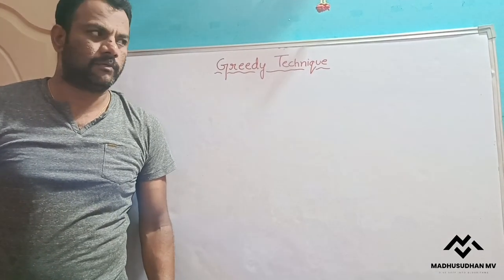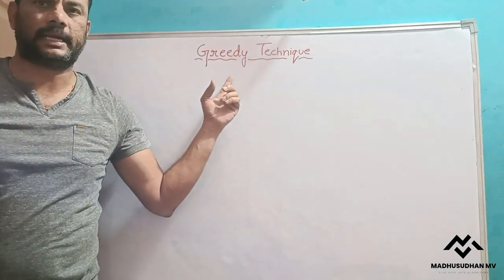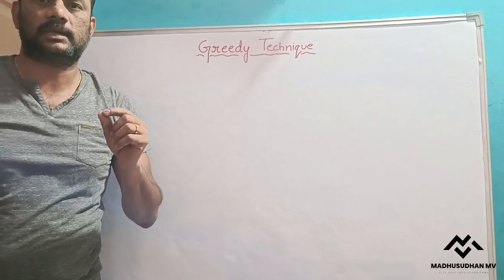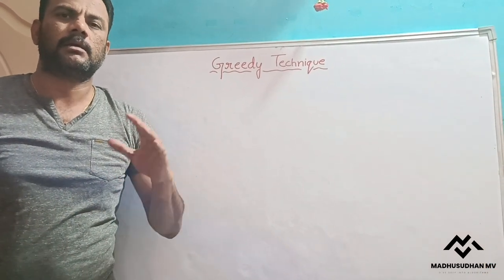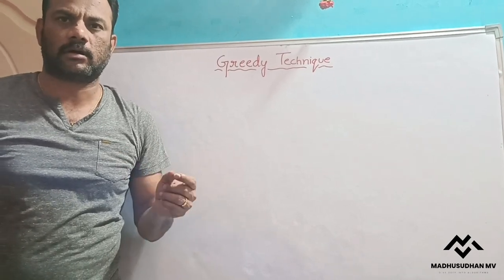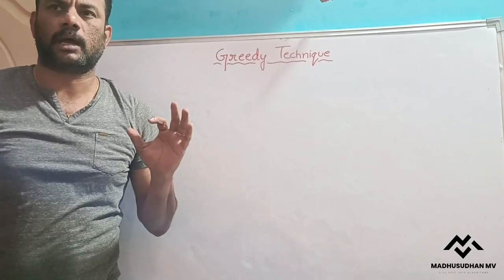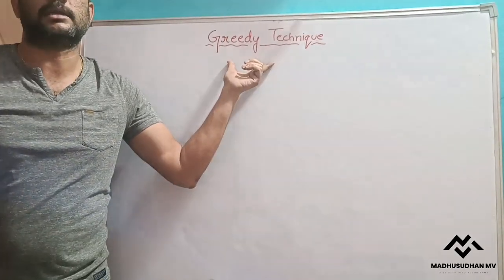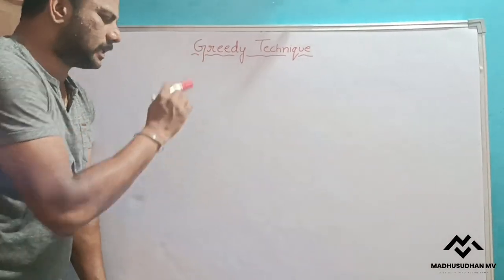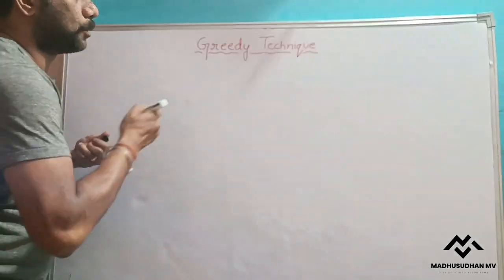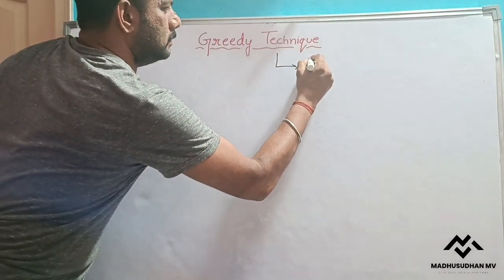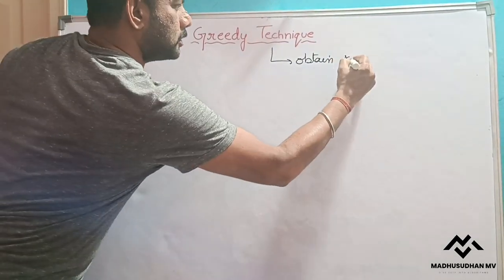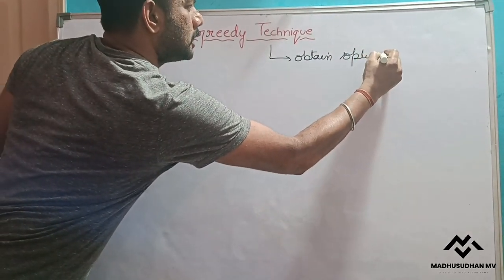In this video I'm going to explain about the greedy technique. This greedy technique is another algorithm design technique, just like brute force, divide and conquer, decrease and conquer, dynamic programming, and transform and conquer. This is also another algorithmic design technique. This greedy technique is used to obtain an optimal solution.